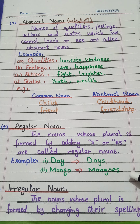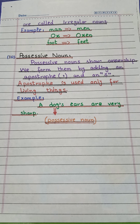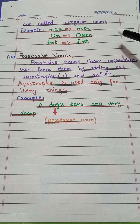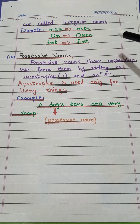Our next type is irregular noun. The nouns whose plural is formed by changing their spellings are called irregular nouns. Examples: man → men, ox → oxen, foot → feet. There is no regular rule — the spelling changes entirely to form the plural.